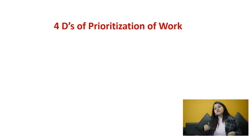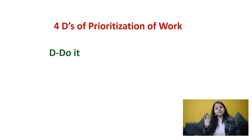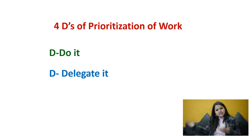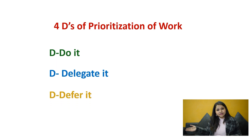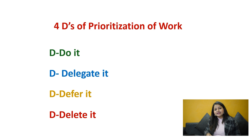My next idea is the Four D's. Whenever we get any task, we quickly run it through these four D's. First: Do it — I have to do it right now. Second: Delegate it — I don't have to do it myself; I can give it to a team member, helper, or student. Third: Defer it — I have to do it but can do it later. Fourth: Delete it. These four D's help you quickly make a decision about any particular task.